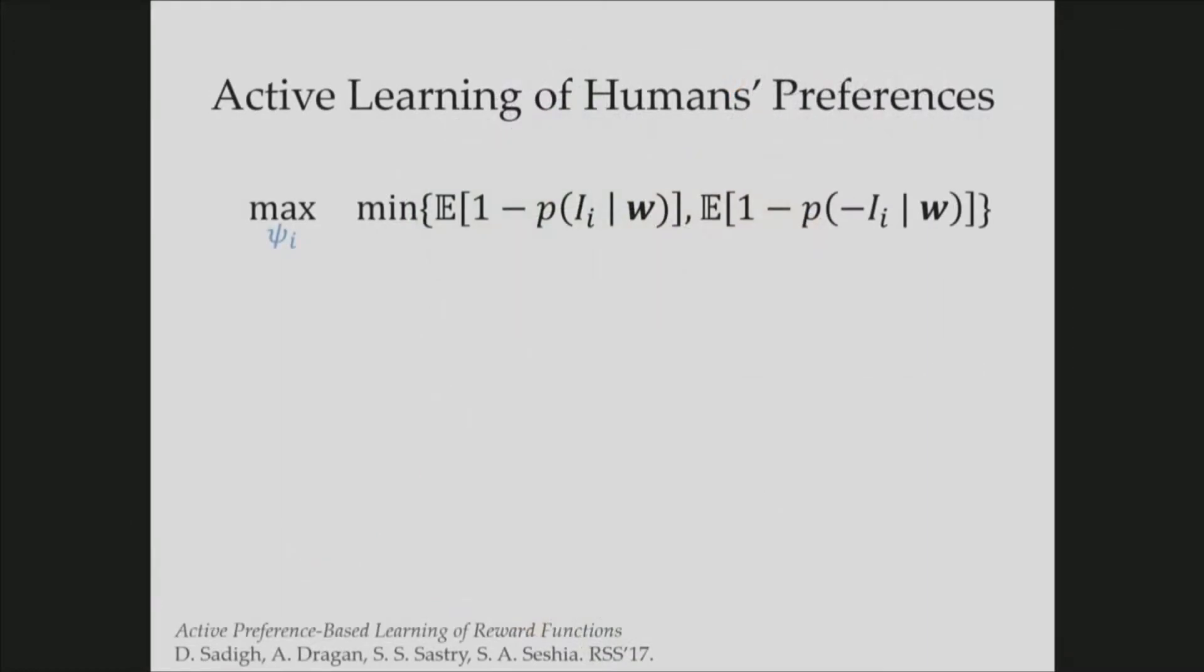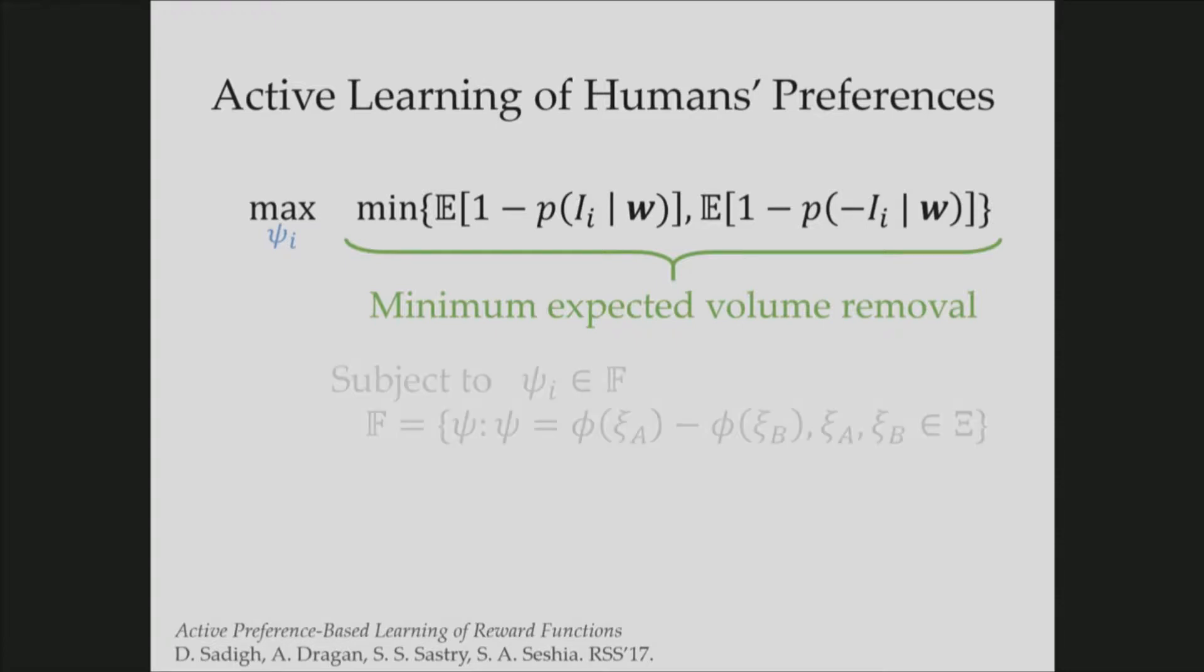And this means the size of the queries we select matters. And we can formulate this as an optimization problem to find the optimal query. So what we are trying to do is to maximize the minimum expected volume removal. That is the volume that's going to be removed after the human's response. And because there are two possible outcomes, the human either chooses trajectory A or trajectory B, we are going to take the minimum of those and we are trying to maximize this quantity.